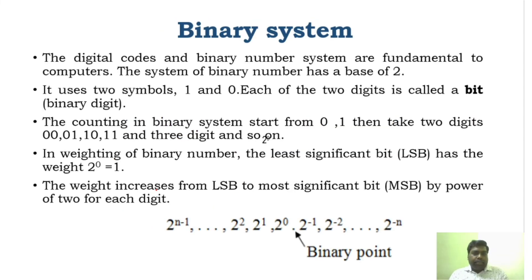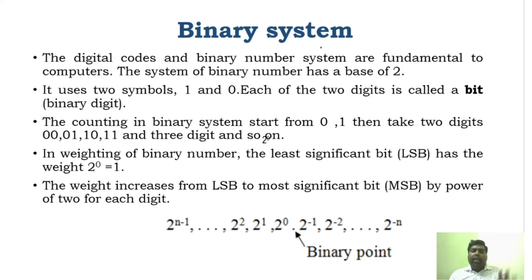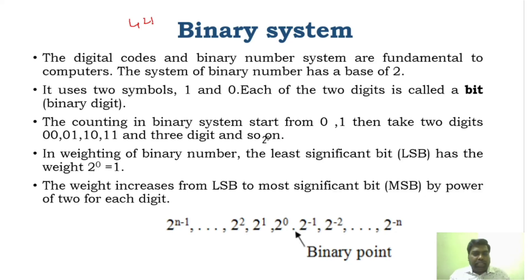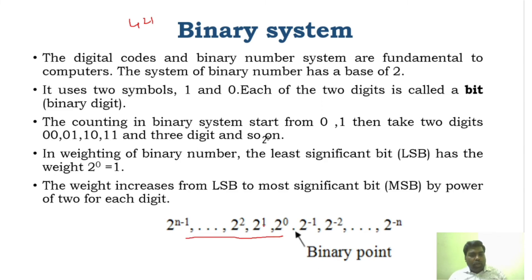Binary is the number system used for digital codes — computers understand only binary: zeros and ones. In binary, there are only two values, 0 and 1. There are various coding techniques such as the 421 code and the 8421 code to represent sequences of zeros and ones. The same positional rule applies: 2 to the power of 0, 2 to the power of 1, 2 to the power of 2, and for the fractional part it goes to minus 1, minus 2, minus 3, and so on.